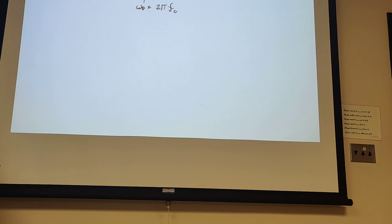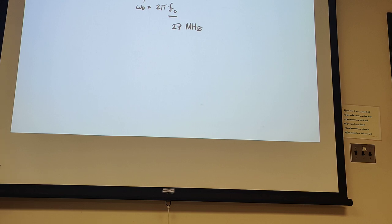We want a way to see how the amplitude is changing and how the phase is changing without having to deal with this carrier frequency — this 27 megahertz — because 27 megahertz doesn't tell us any information about what we're sending. All it does is allow us to send the signal. The way we're going to get this A(t) and θ(t) out is to use some trig identities.